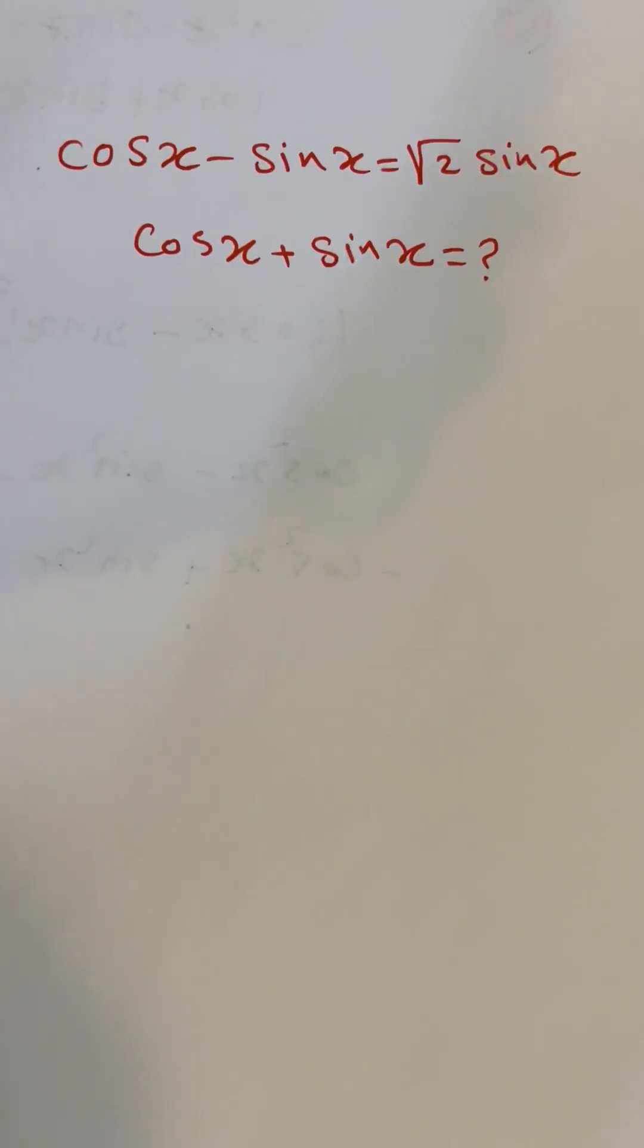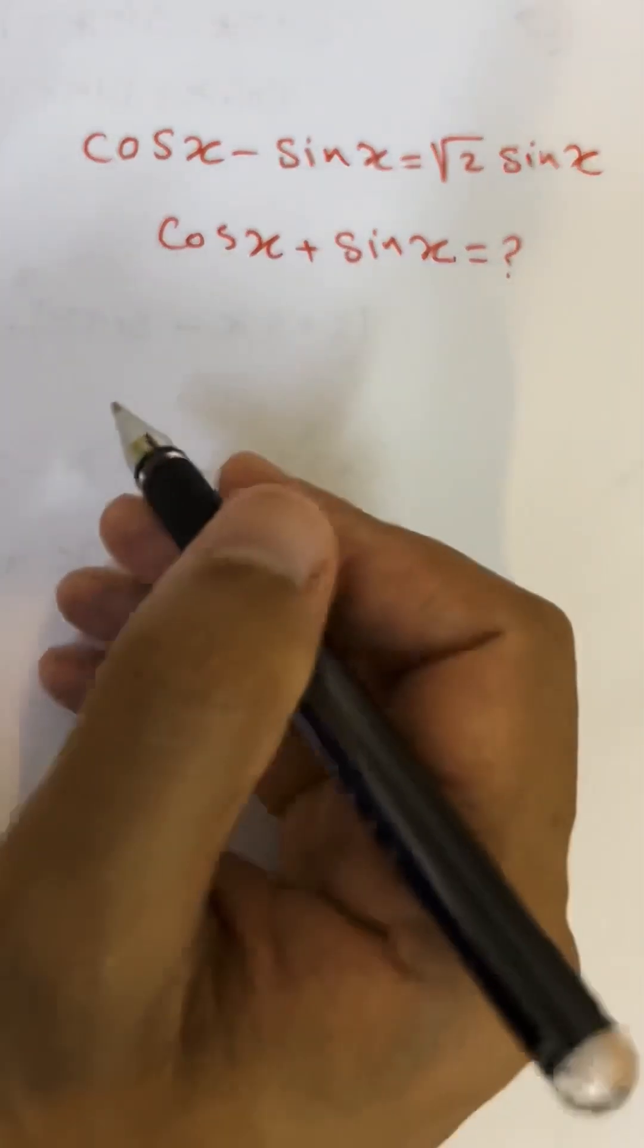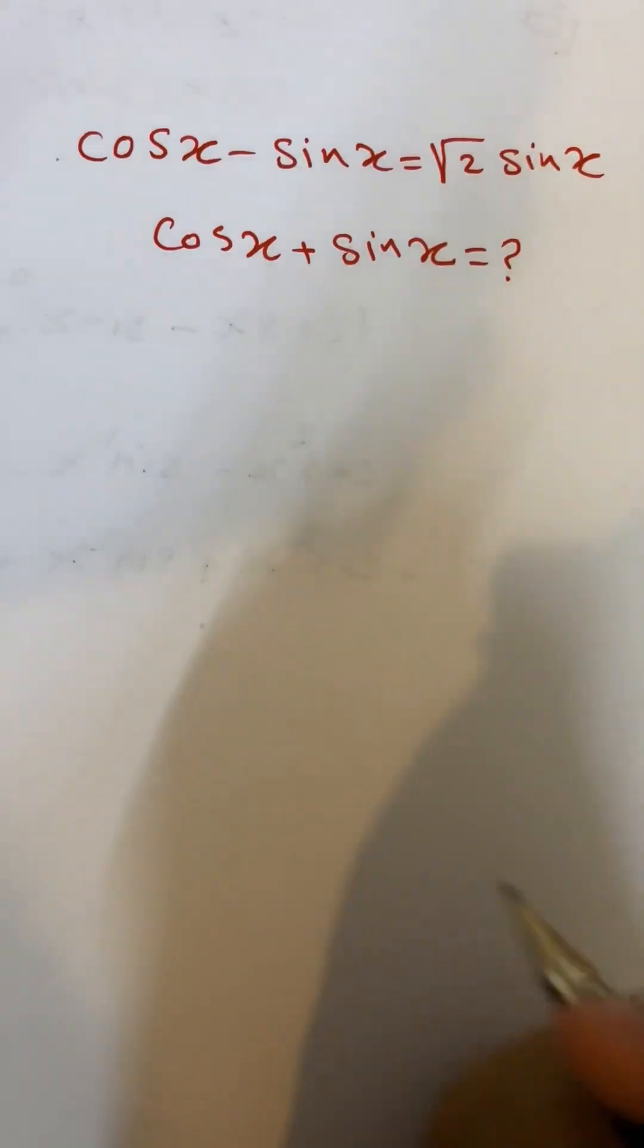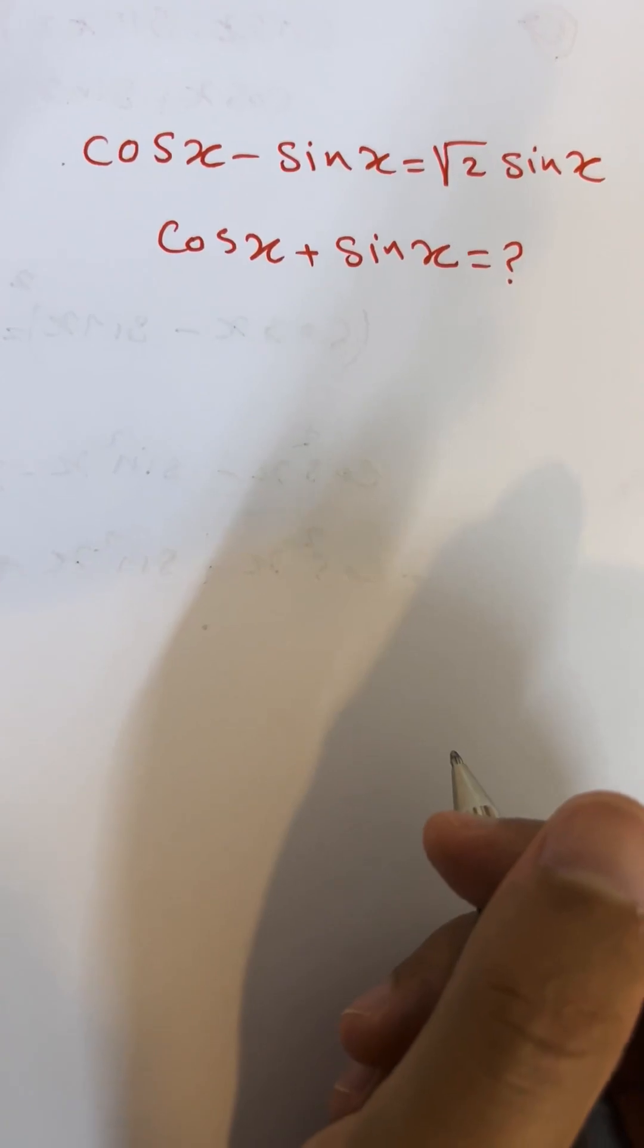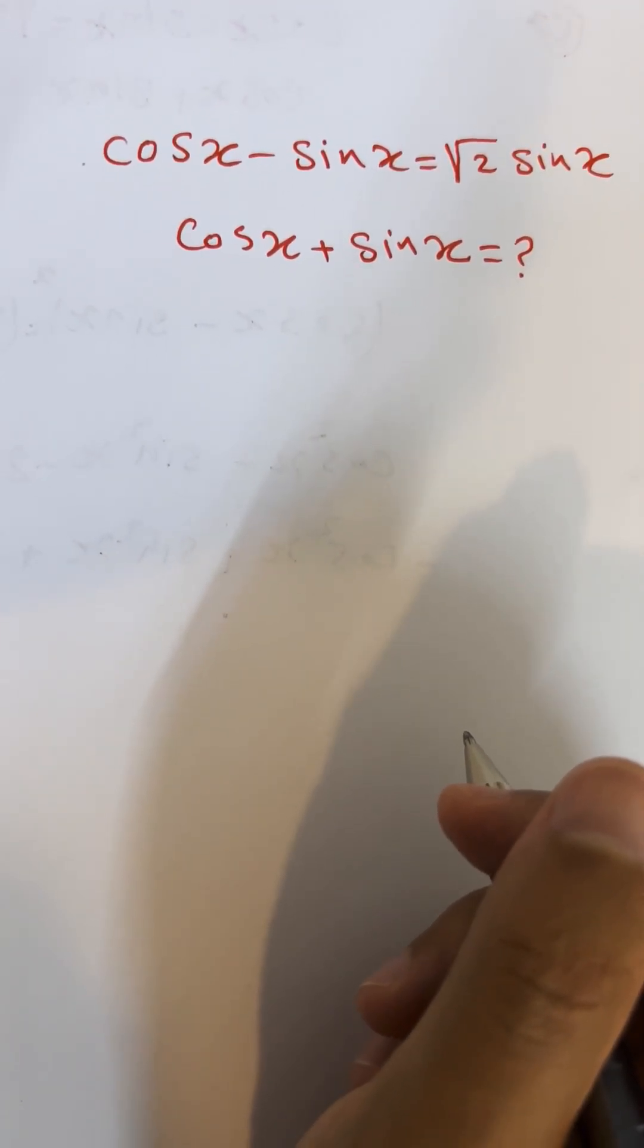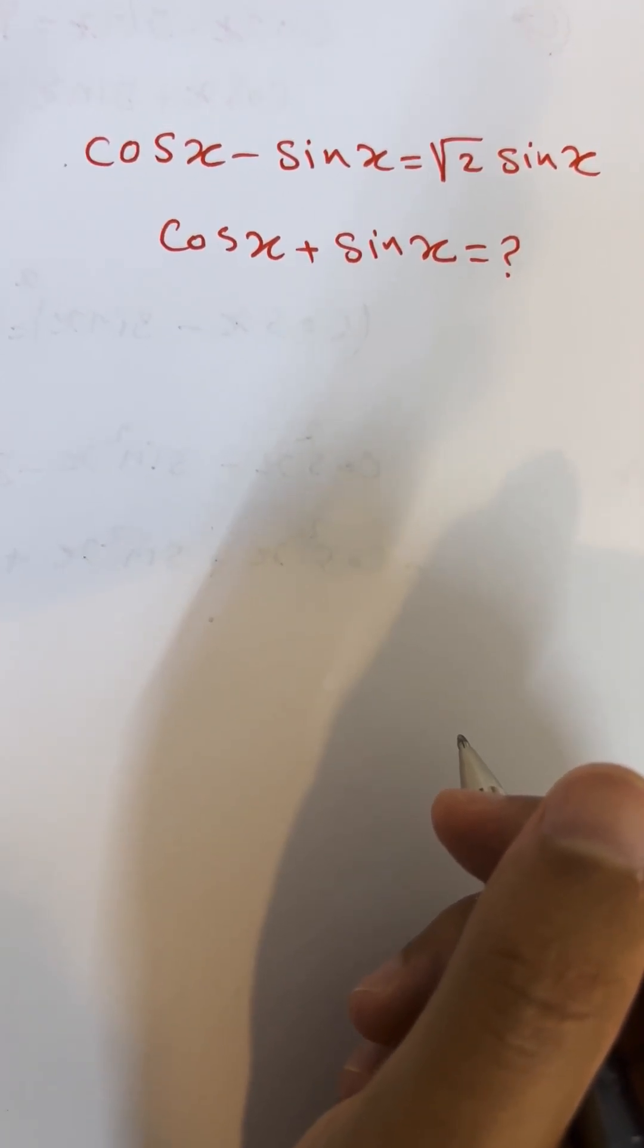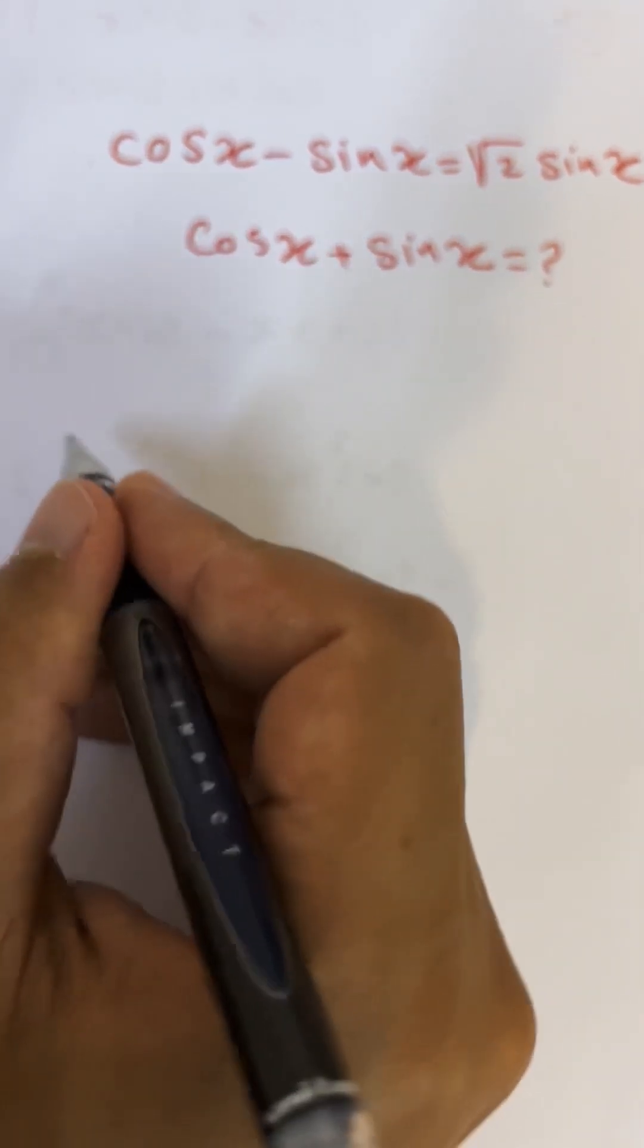Let's start. What are you going to do first? As you can see here, this is an equation. First of all, we need to handle the root 2. How can you cancel the root 2?